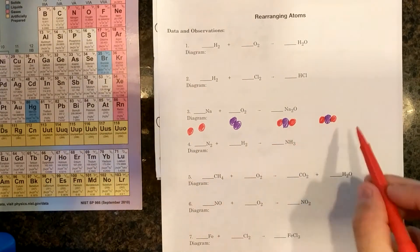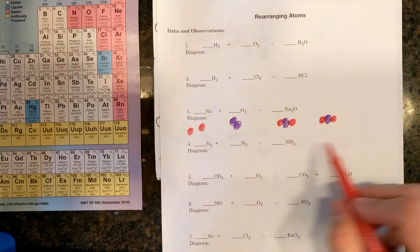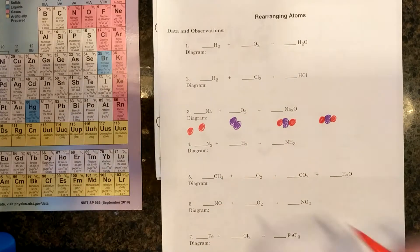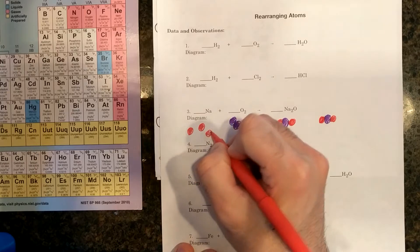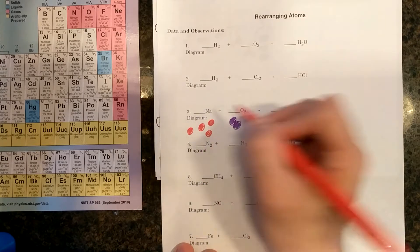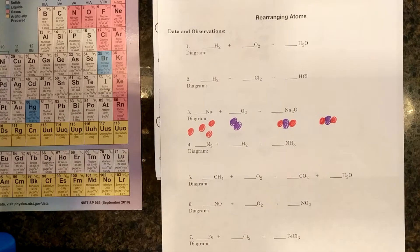Almost there now. Now I have four Nas on the right side and only two on the left side. So I have to add two more Nas. And now in inspection, I notice that my chemical equation is balanced.